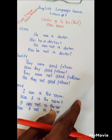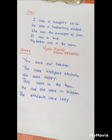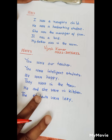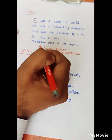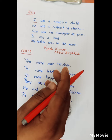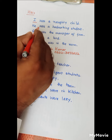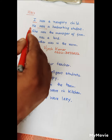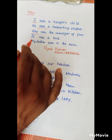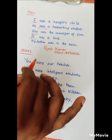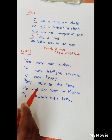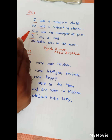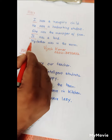Now we will discuss where we use 'was' and where we use 'were'. We use 'was' with I — 'I was a naughty child.' With he — 'He was a hardworking student.' With she — 'She was the manager of the firm.' With it — 'It was a bird.' And with a singular noun — 'My father was in the room.' With I, he, she, it, and singular nouns, we use 'was'.